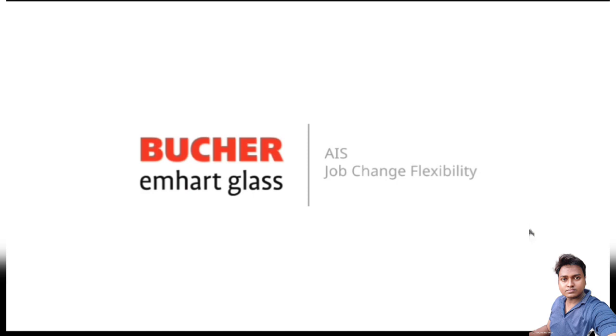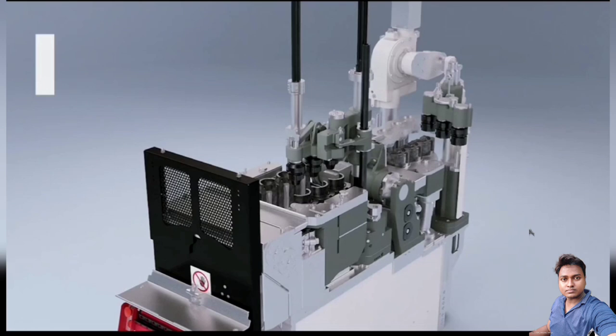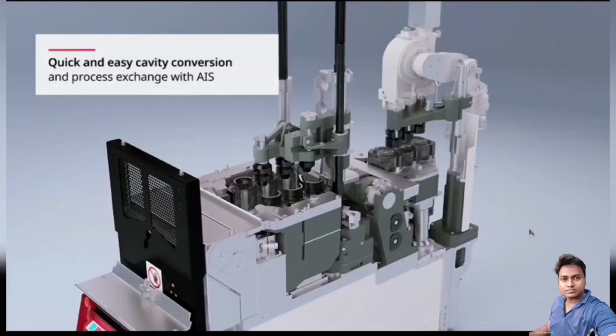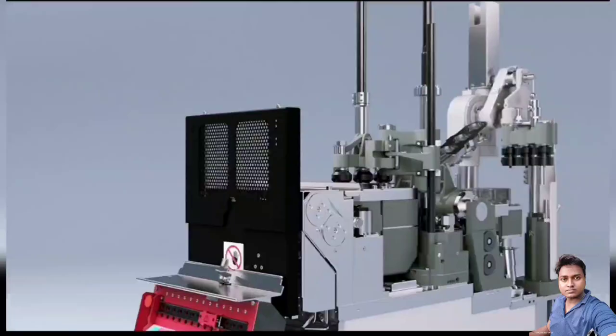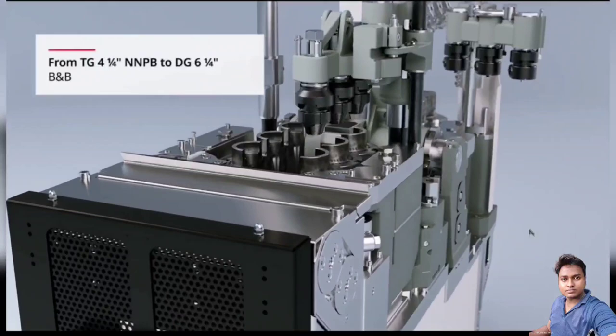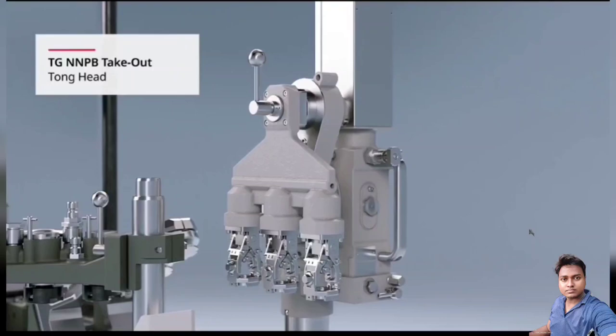AIS job change flexibility. Quick and easy cavity conversion and process exchange with AIS. From TG four quarter NNPB to DG six one fourth blow and blow.